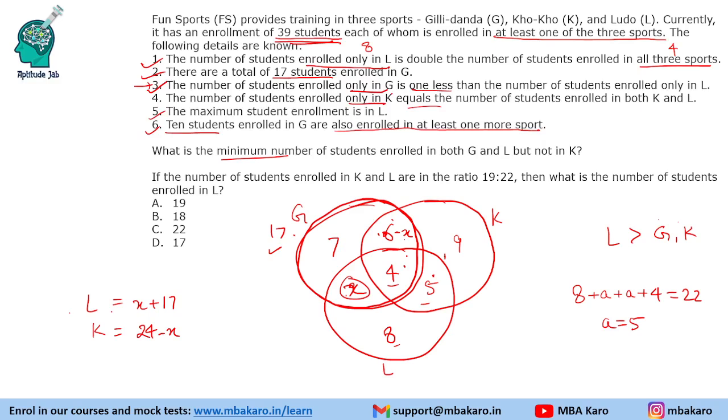So L is greater than K. It implies X plus 17 should be greater than 24 minus X or 2X should be greater than 7 or X is minimum will be, X will be greater than 3.5. So X will be minimum 4. Minimum 4, so X can be 4, it can be 5 or 6 also. Like it can be 4, 5, 6 and accordingly it will be 2, 1 or 0. So minimum value is asked, so we will take this as minimum 4.